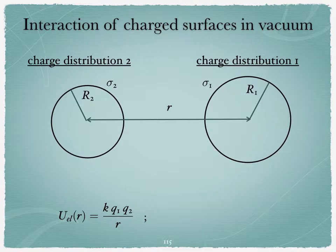It's k times q1 times q2 divided by r. That would give you the electrostatic potential of interaction between these two objects. Now here I need to specify what is k, and I will do that in the international system of units. In this system of units, this is 1 over 4 pi epsilon naught times r. And here epsilon naught is the dielectric permittivity of vacuum.